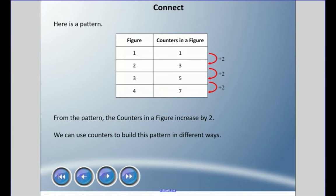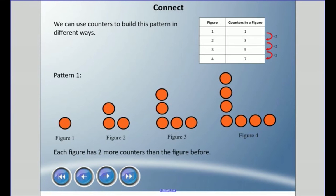Here's a pattern I have: a table with a column of figures — figure one, figure two, figure three. It's talking about some pictures we're going to make and also about how many counters are in that figure. You might see that the counters increase by two each time, so we can use counters to build patterns in different ways.